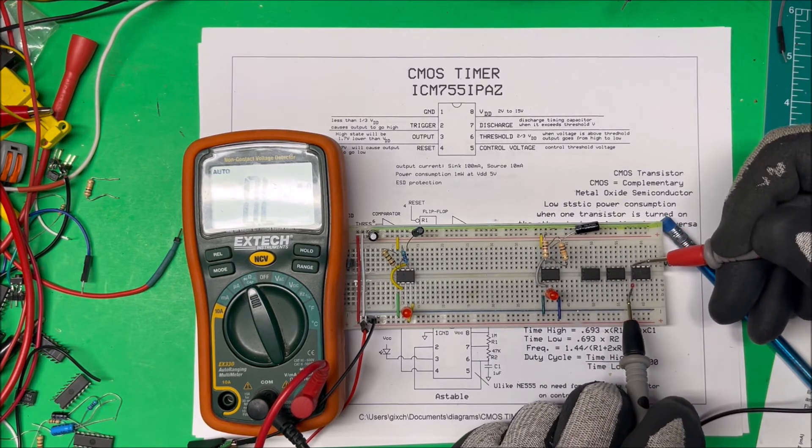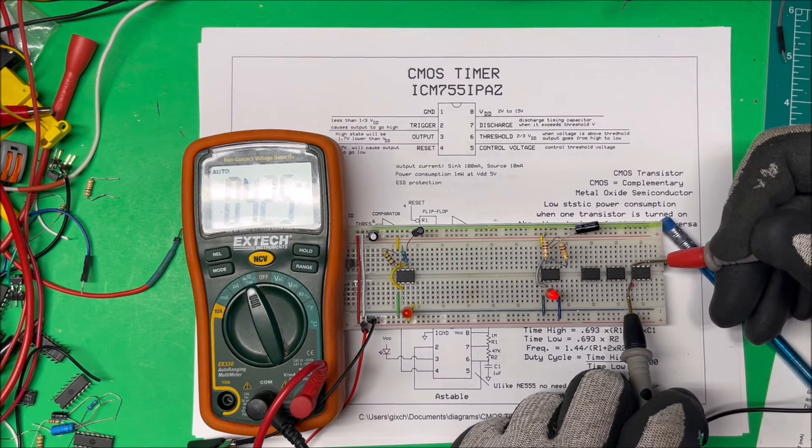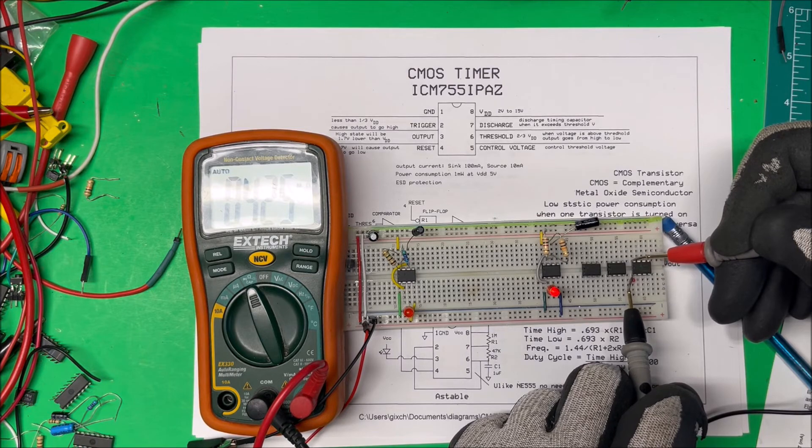Now this is the CMOS one here. And it's on megohm scale and it's 0.425 megohms.